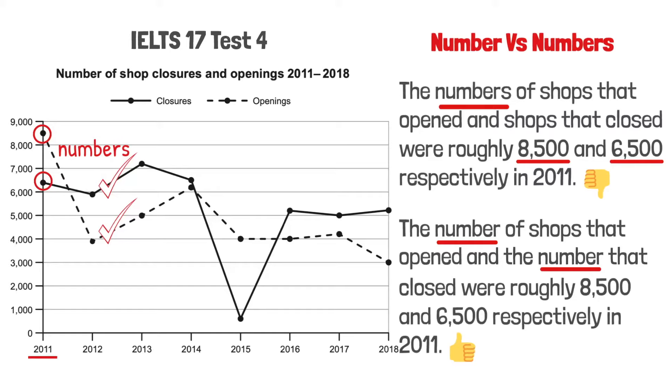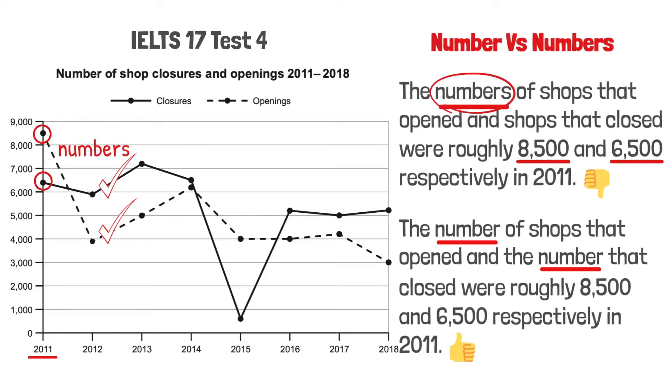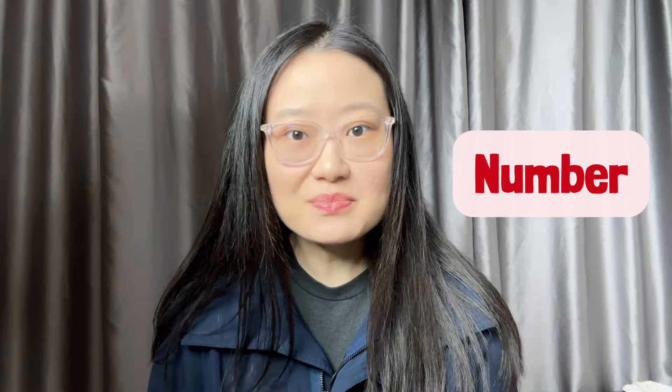When there are two numbers for each year, either use the plural 'numbers' or repeat the word 'number': the number of shops that opened and the number that closed were roughly 8,500 and 6,500 respectively in 2011. So when there are two numbers for each year, use the plural 'numbers' or use the word 'number' twice. Hopefully, now you know when to use the singular 'number' and when to use the plural 'numbers.'